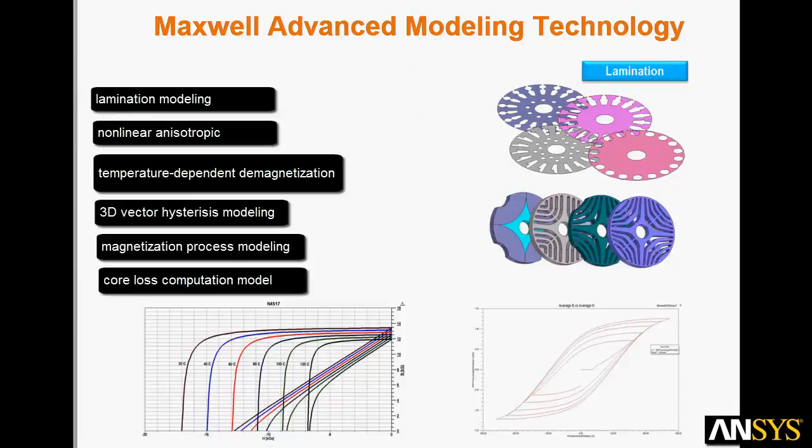Maxwell simulates 3D and 2D electromagnetic and electromechanical devices using the most advanced modeling technology. Maxwell uses an automated finite element method to solve static, frequency domain, and time-varying electromagnetic and electric fields. For motors, we have the most advanced modeling methods for laminations, nonlinear materials, temperature-dependent demagnetization, hysteresis, magnetization processes, and core loss.